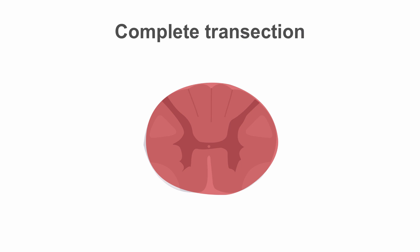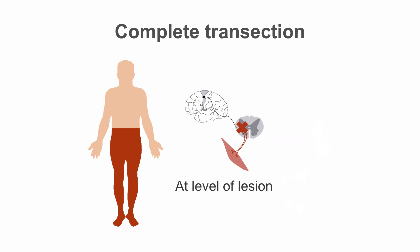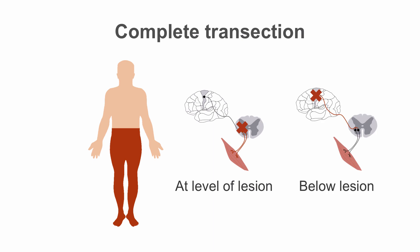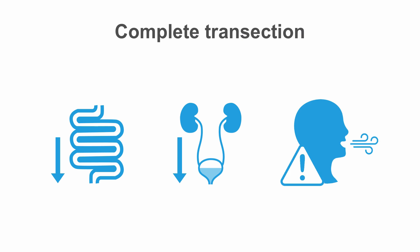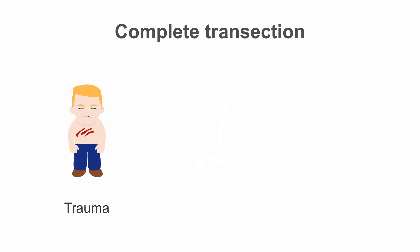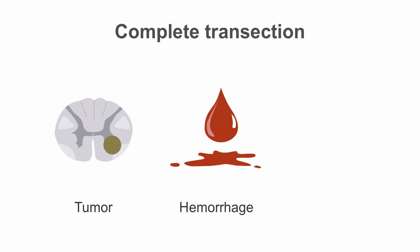When complete cord transection occurs, there is total loss of sensation and motor control below the level of the lesion. Lower motor neuron changes occur at the level of the lesion, and upper motor neuron changes are seen below. Early on after the injury, there is spinal shock and total flaccidity. Bowel and bladder control is lost. Respiratory dysfunction occurs if the lesion is above C5 because of injury to the phrenic nerve, which arises from C3 through C5 and innervates the diaphragm. Complete transection is most often seen after major trauma but can also result from a penetrating injury, transverse myelitis, or tumors or hemorrhages that cause compression of the cord.